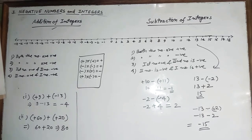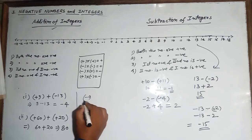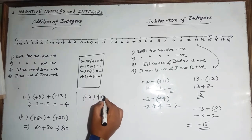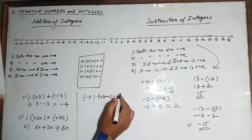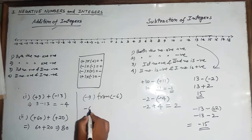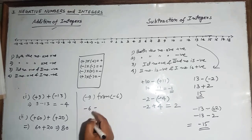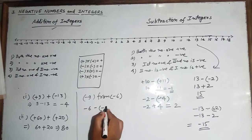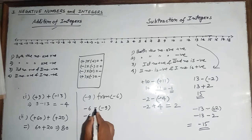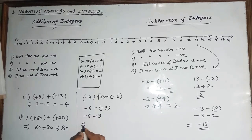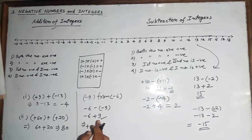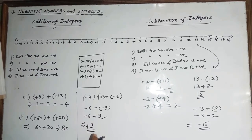Subtraction example: subtract minus 9 from minus 6. Write it as minus 6 minus minus 9. Minus into minus becomes plus 9, so we get minus 6 plus 9. Since 9 is greater, the answer is positive: 9 minus 6 equals positive 3.